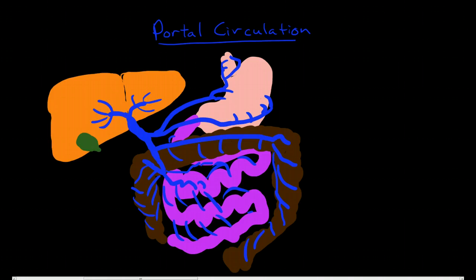So the portal vein is the vein that drains the entire GI tract from the distal part of the esophagus through the stomach, the small bowel, the colon, all the way down to the rectum.